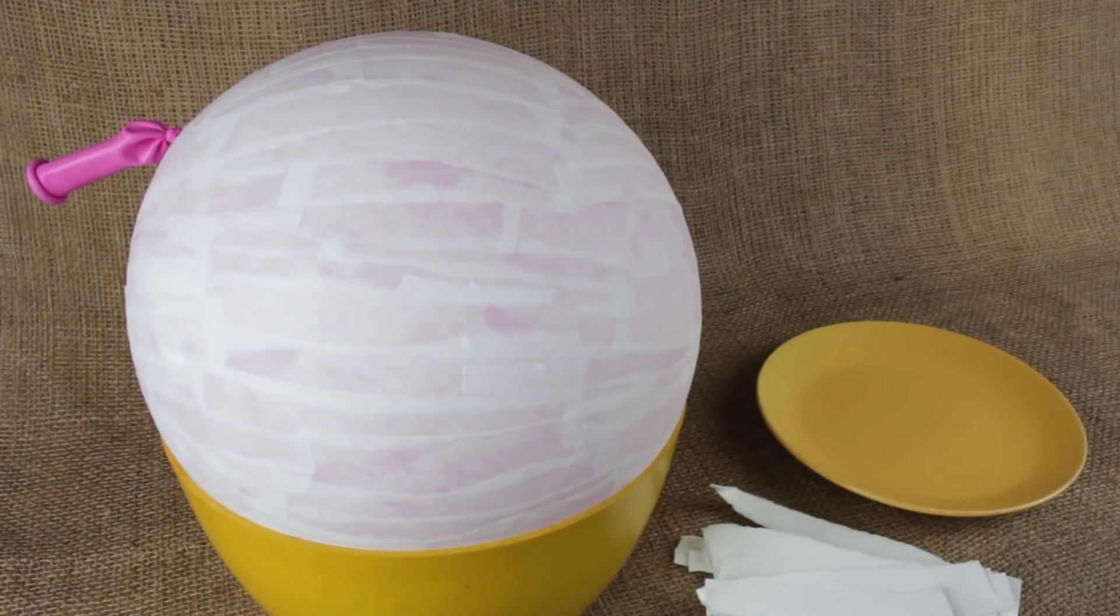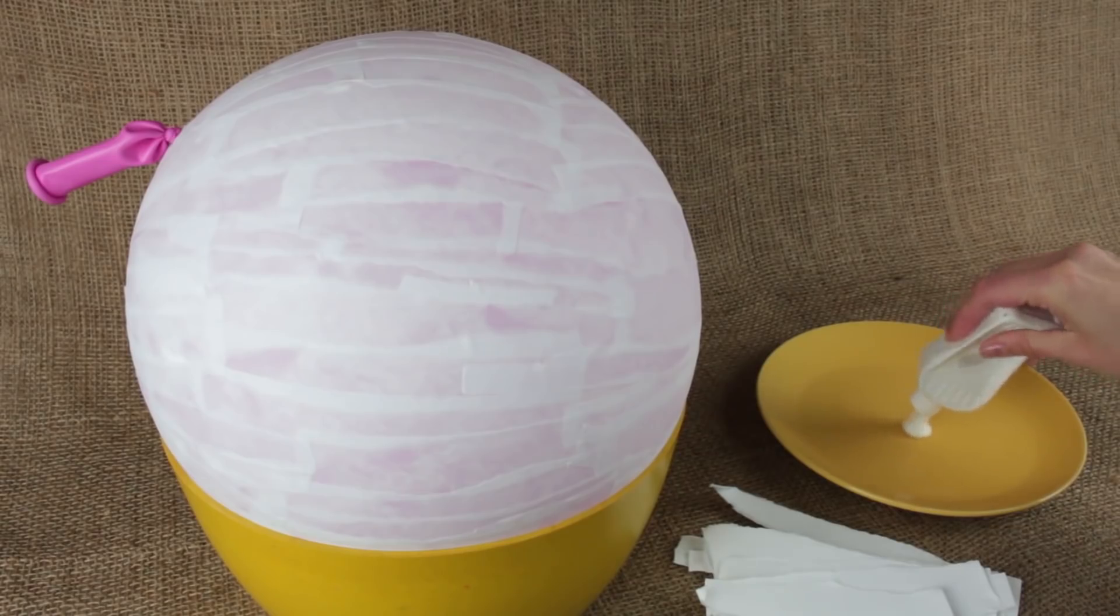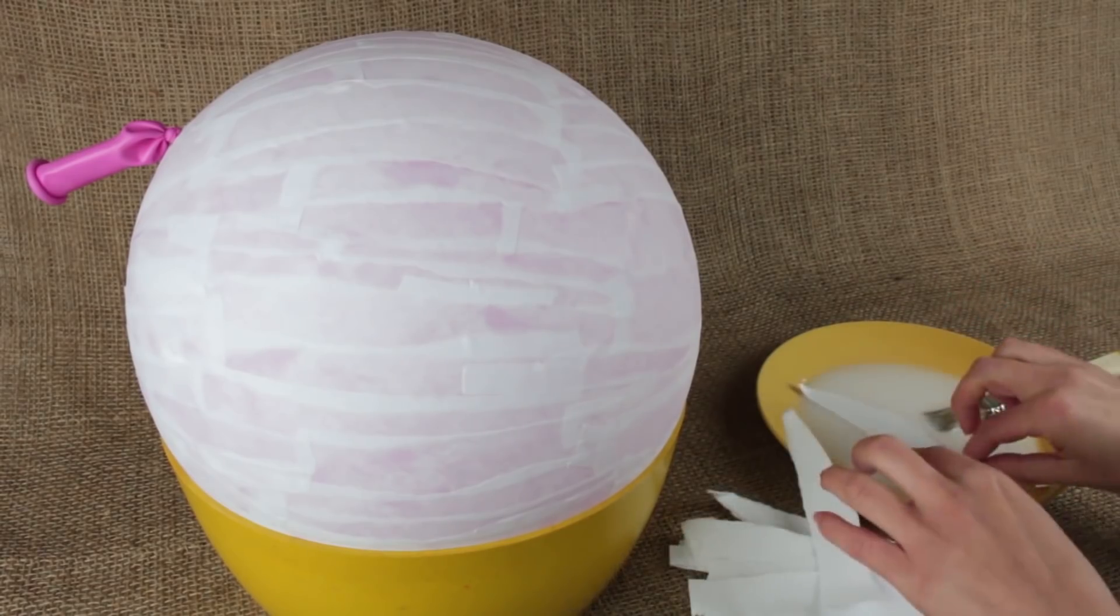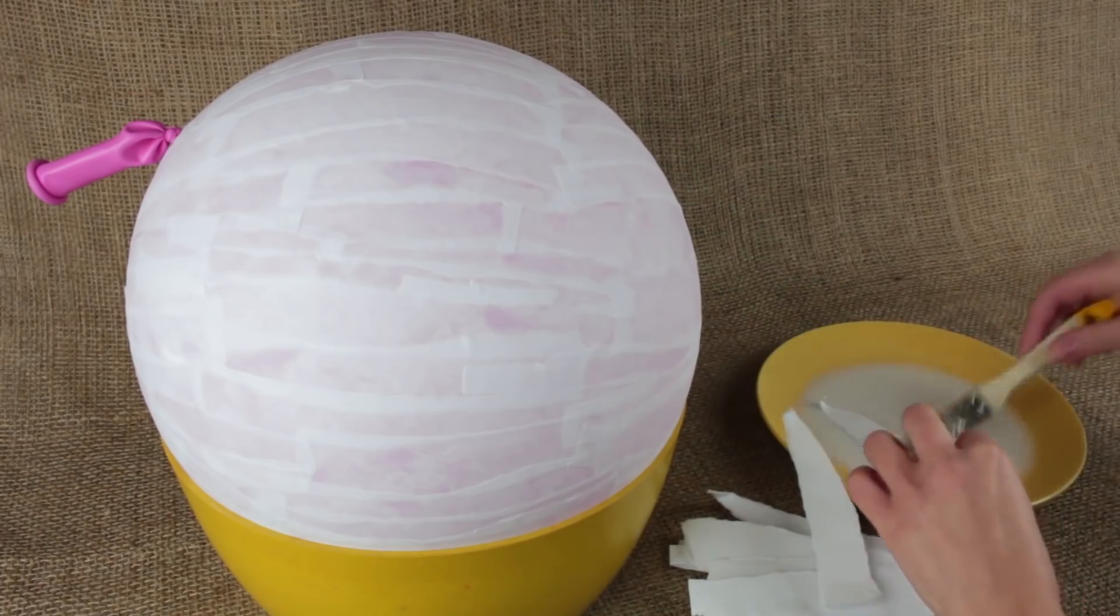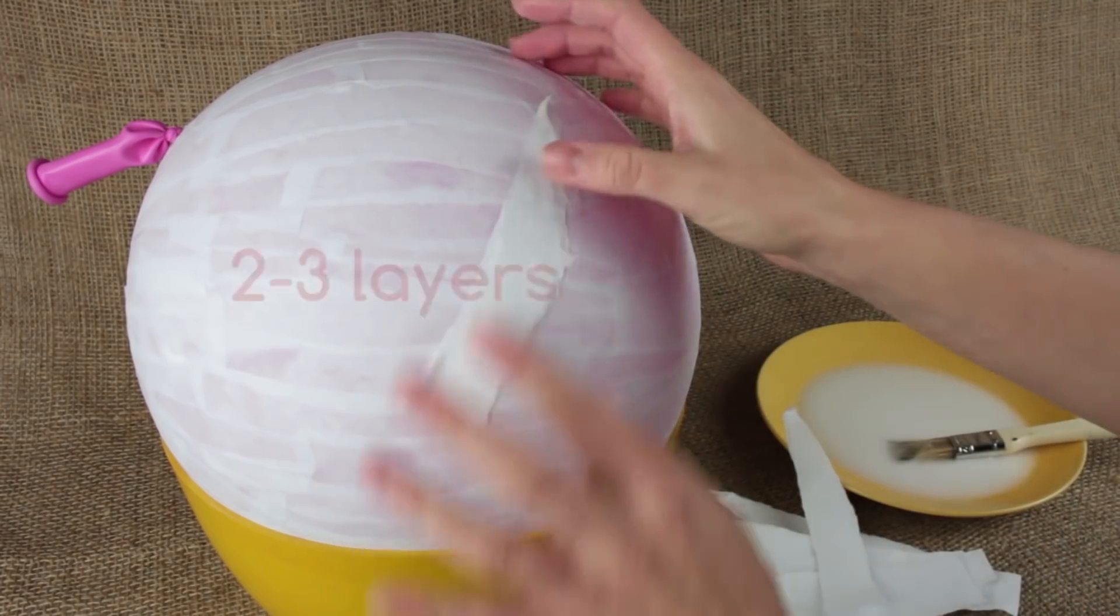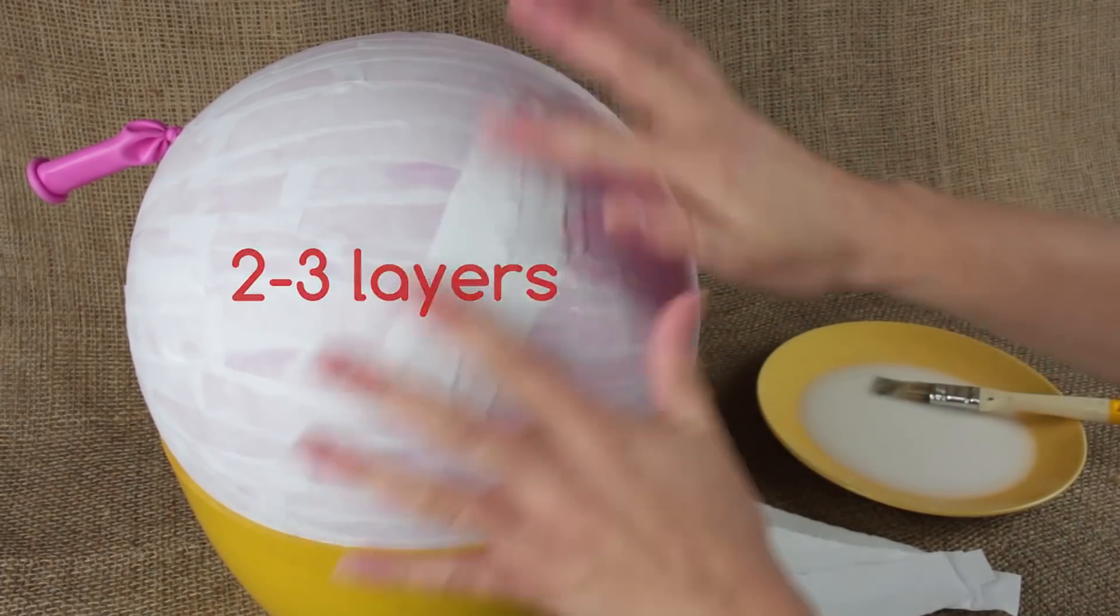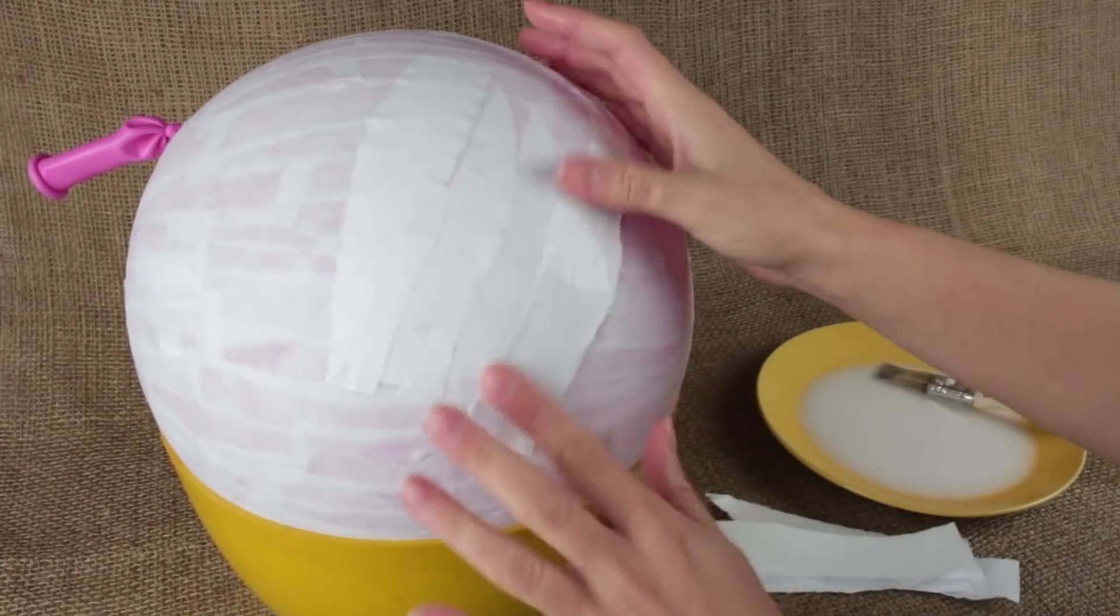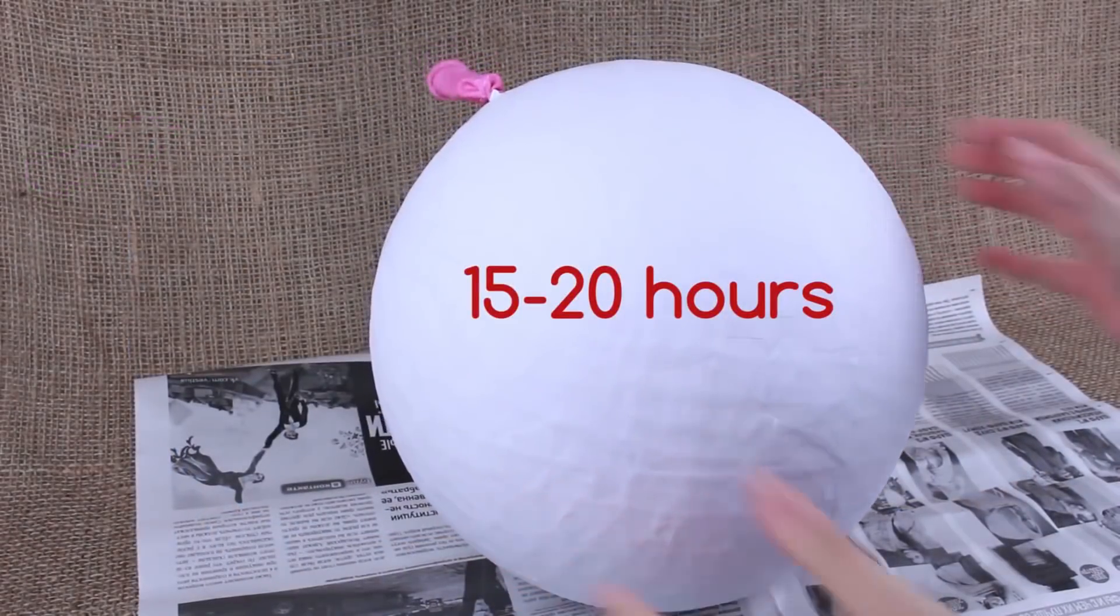The first coat is ready. We need to mix white glue with water for further coats. Soak the paper. Remove the excess water. Coat the surface with two to three paper layers to make the pinata keep its shape. It'll take about 15 to 20 hours to dry.